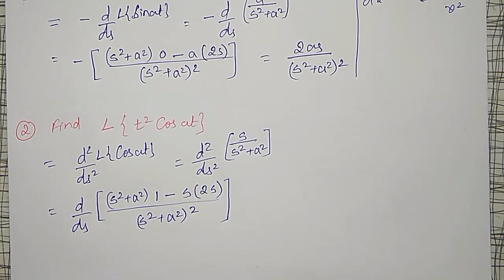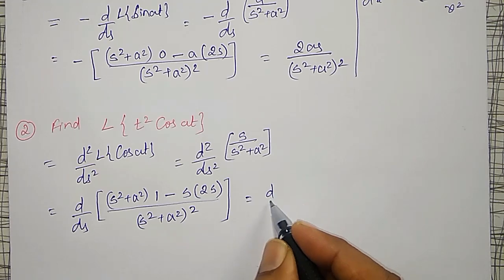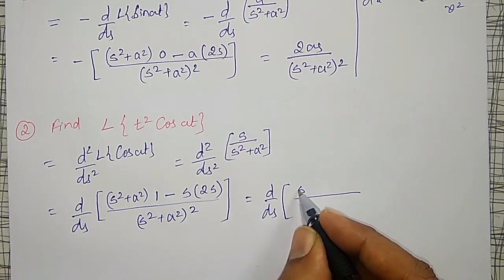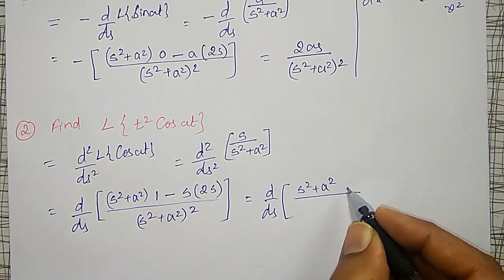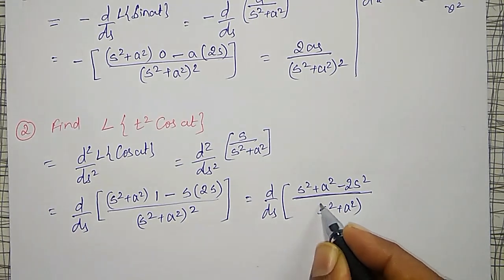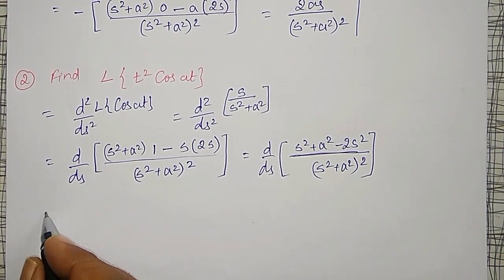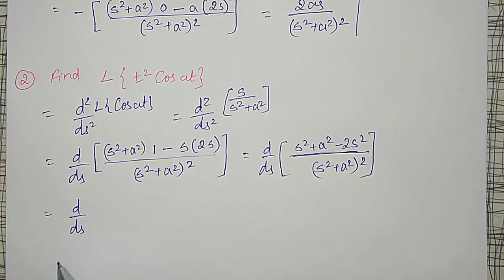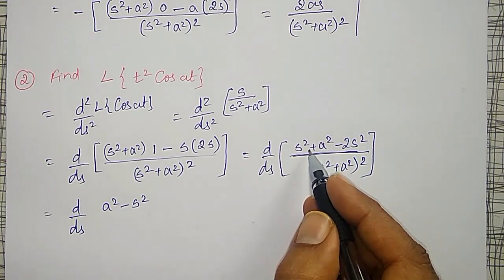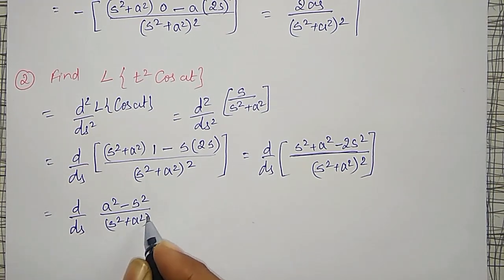Simplifying this: d by ds of s squared plus a squared minus 2s squared, divided by s squared plus a squared squared. Therefore, d by ds of a squared minus s squared divided by s squared plus a squared squared. This one I have to differentiate with respect to s again.